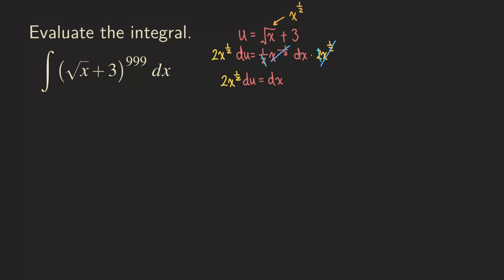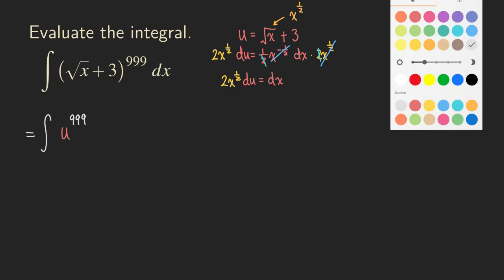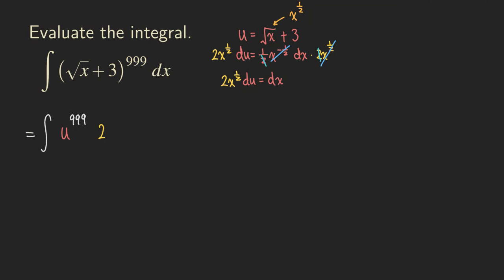Now we are ready to go back and make our substitution. Going back to the integral: everything inside the 999 power becomes u, so we have u to the 999 power. And the dx is replaced by 2 times x to the one-half times du.